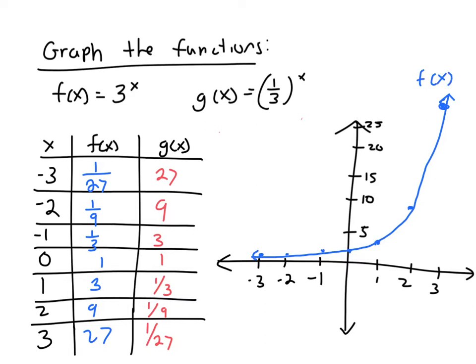Now let's do g(x). So when I have x equal to -3, y is really big, way up here. And then when x equals -2, g is 9. And when x equals -1, g is 3. And then when 0, it's 1. And then when it's 1, it's 1/3. And when it's 2, it's 1/9. And then 1/27.